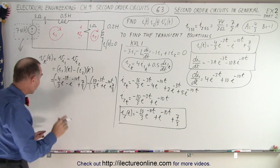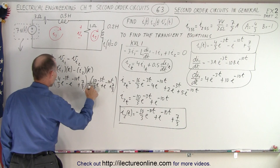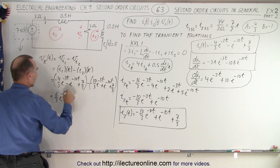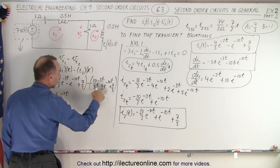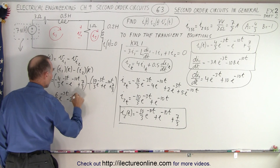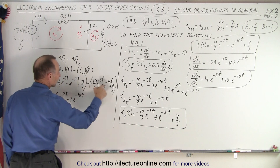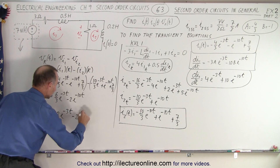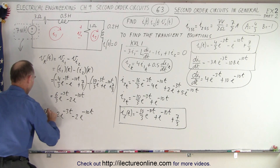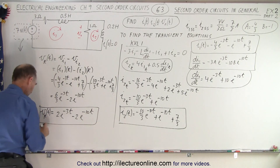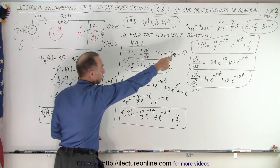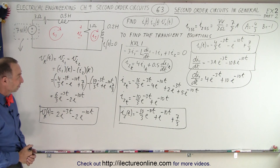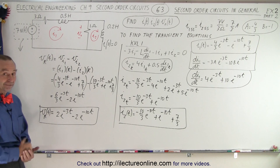When we take that and subtract one from the other, the negative times negative makes a positive, so we have ten minus four which is six over three e to the minus three t, and minus one plus one gives minus two e to the minus ten t, and the seven-thirds minus seven-thirds drops out. So this becomes two e to the minus three t minus two e to the minus ten t, and that is the voltage across the resistor as a function of time. So now we have current one, current two, and the voltage across the resistor — and that is how it's done.